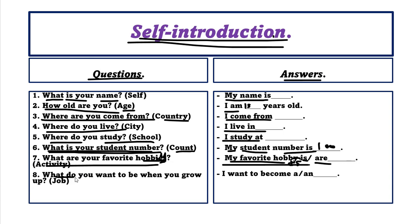Next: 'What do you want to be when you grow up?' — this is your dream job. You can say 'I want to become a policeman' or 'I want to become a doctor' for consonant sounds. But for vowel sounds, use 'an': 'I want to become an engineer' or 'I want to become an aeronautic.' Don't forget the article rule. That is our review for self-introduction.